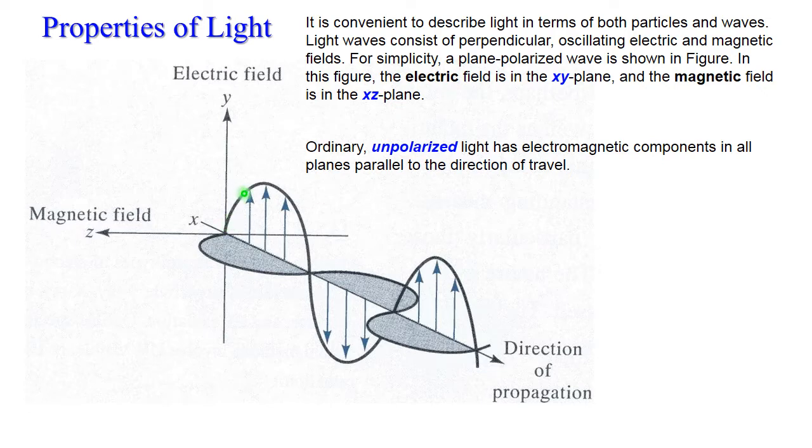Light waves consist of perpendicular oscillating electric and magnetic fields. You cannot have only one field oscillating. So if the electric field oscillates in the XY plane, the magnetic field will oscillate in a perpendicular plane. Plane polarized wave is shown in this figure. Now, if you have ordinary unpolarized light, you have such waves with planes located at different angles. The direction of propagation will still be the same.